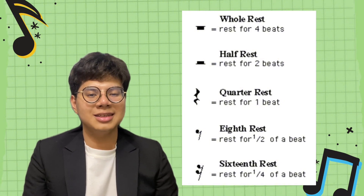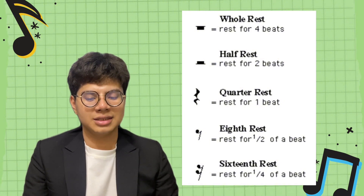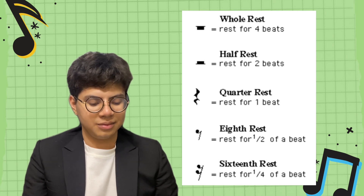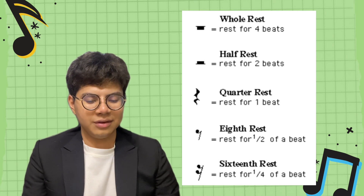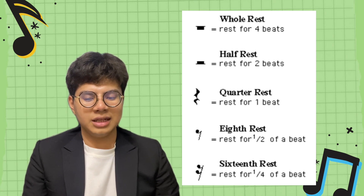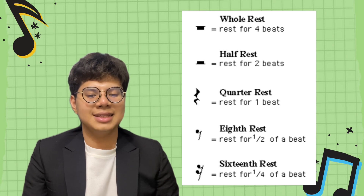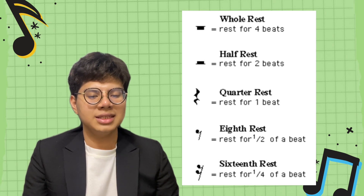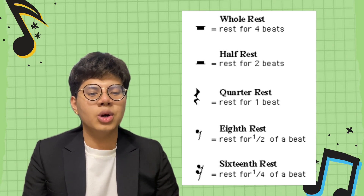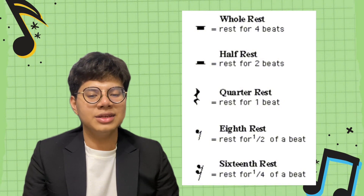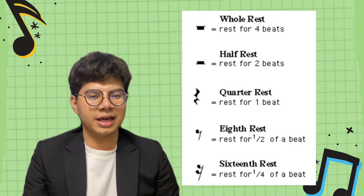The next one is the eighth rest. It is a slanted stem with a flag on the left. The length of an eighth rest is one-half beat, or one-eighth of the value of the whole rest.